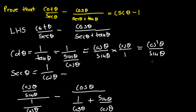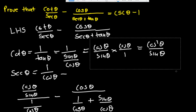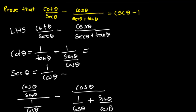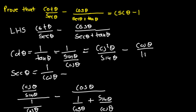So this side will be equal to cos squared theta over sine theta, minus cos theta. On the other side we have the same denominators, so we just add the numerators to get 1 plus sine theta all over cos theta.